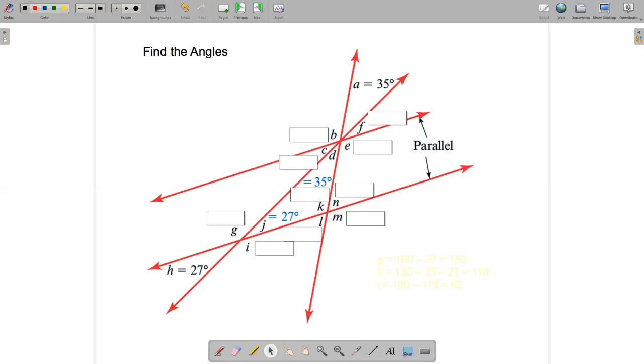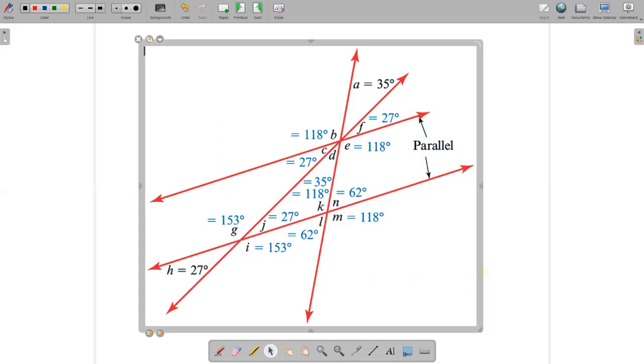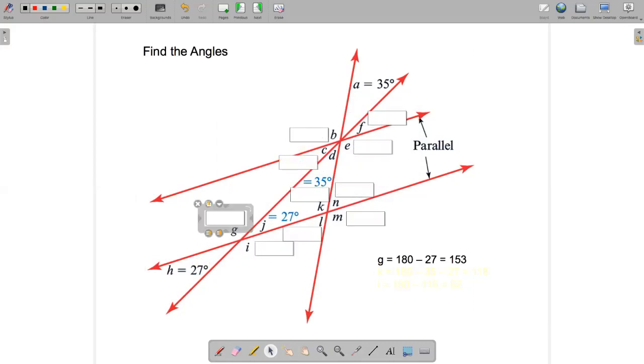So now we've got, let's see, where should we go next? Oh, I know. G, angle G, is on the other side of H. It's a supplementary angle. These two angles must add to 180. So if I do 180 minus 27, I'll get what G is. So that's 153. So let's fill that in. There we go. 153. And then I is opposite. That must be 153 as well.